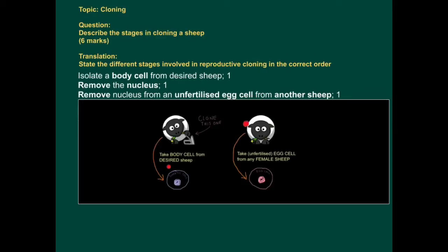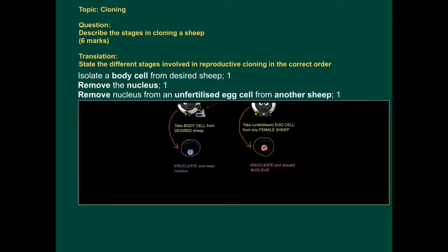Meanwhile, we get another sheep and we remove the nucleus from an unfertilized egg cell. And you can see those two processes play out here. So we basically enucleate this cell and extract the nucleus. That's what we want. But in the other cell...